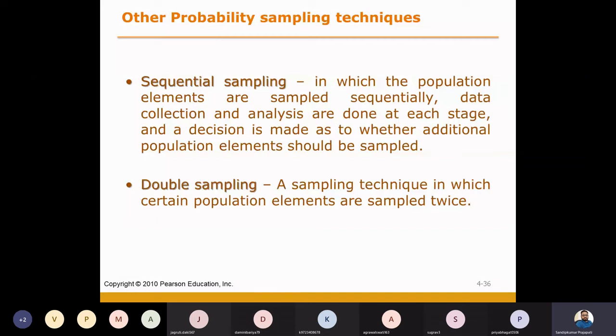You are going to select the sample from sample - sample within the samples. For example, I select five students from the 20. Sample within the sample. This is called double sampling method. These are two other methods which we can also use under the probability sampling method.